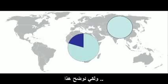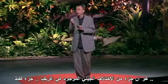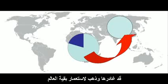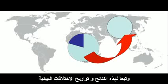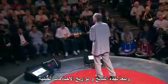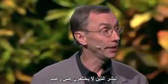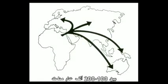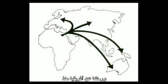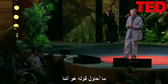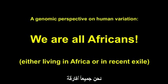A model to explain this is that a part of the African variation, but not all of it, went out and colonized the rest of the world. Together with the methods to date these genetic differences, this has led to the insight that modern humans — essentially indistinguishable from you and me — evolved in Africa quite recently, between 100,000 and 200,000 years ago, and later, between 100,000 and 50,000 years ago or so, went out of Africa to colonize the rest of the world. So, from a genomic perspective, we are all Africans.